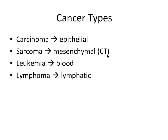We're going to start with cancer types. There are four main types to cover. Carcinoma is where the cancer arises in epithelial tissue. Sarcoma is where the cancer arises in mesenchymal or connective tissue. Leukemia is where the cancer originates in blood, and lymphoma in lymphatic tissue.